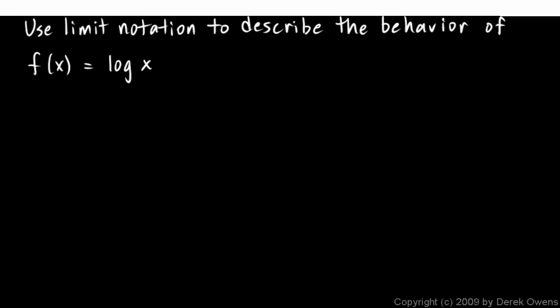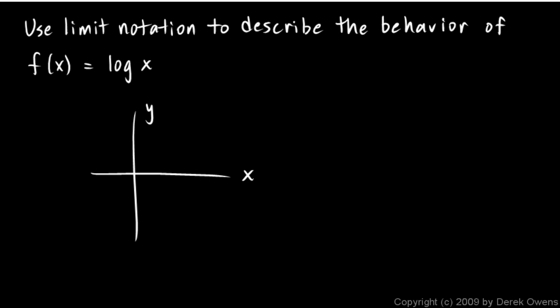Well for this function, a picture should come into your mind. Here's your x-axis and your y-axis and it crosses at one right here, and it's asymptotic to the y-axis there and then it grows going to the right.